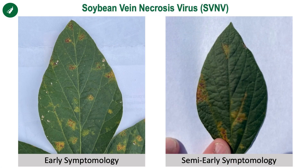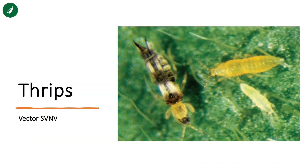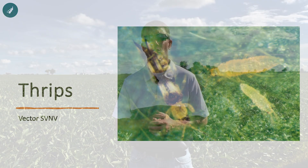This is a virus that's actually vectored by a small insect called thrips. They're very small, tough to identify, but they tend to feed on the lower side of the soybean leaf and they vector soybean vein necrosis.